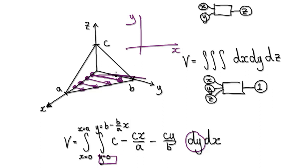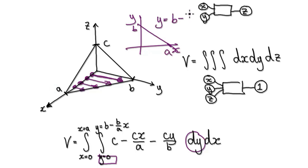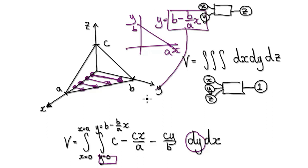So this is your y-axis. The equation of that line: the y-intercept is b, and the x-intercept is a. So the equation is y equals b minus (b over a) times x. That's our equation there — this line here. So you stop at y equals b, which is the intercept, and the gradient is negative b over a.